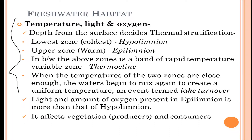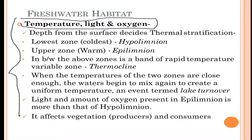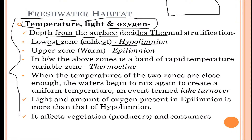Moving on, let's talk about some of the factors on which habitat depends. The basic factors are temperature, light, and oxygen content. Depth from the surface decides thermal stratification. The lowest zone is the hypolimnion and the upper zone is the epilimnion, demarcating the upper and lower zones in oceans or rivers.